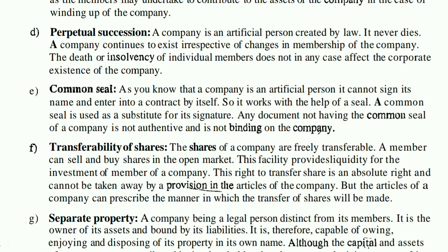The next topic is perpetual succession. A company is an artificial person created by law — it never dies. A company continues to exist irrespective of changes in its membership. The death and insolvency of individual members does not affect the corporate existence of the company. In partnership, however, the death or retirement of a partner can dissolve the firm.